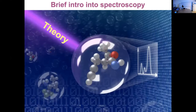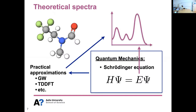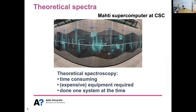To alleviate this problem, brilliant scientists have been working on solving the same problem using quantum mechanics — you have the Schrödinger equation, and then a bunch of practical approximations of it can be used to directly predict the spectra given a molecular structure. But again, it has a few of the same problems as experimental spectroscopy: specifically it can be time-consuming if you need to apply for computer time, and it also needs to be done one by one. This is now an image of the Mahdi supercomputer in Finland.